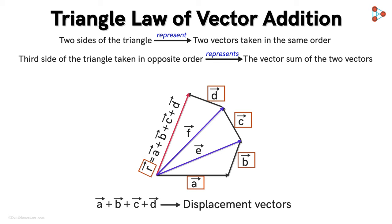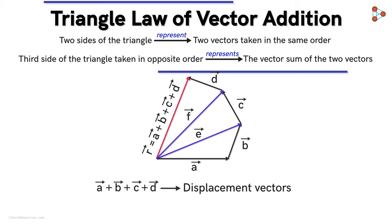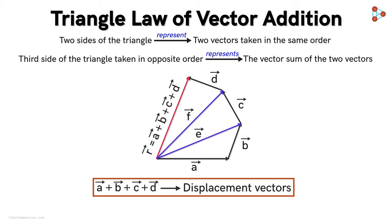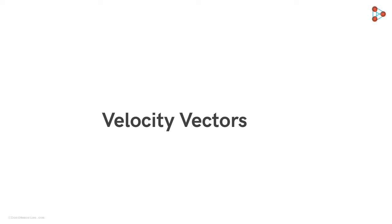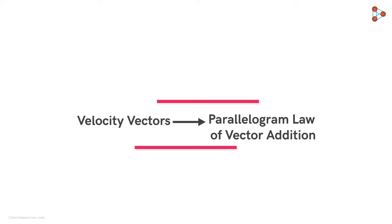So we saw how we can add two vectors using the triangle law. This law is easily understood if we think of the vectors as displacement vectors. Now, if we think of the vectors as velocity vectors, we arrive at another law of vector addition called the parallelogram law of vector addition. We will see this law in the next lesson, and we will also see how these two laws are equivalent to each other.